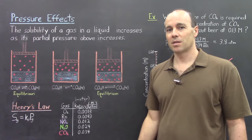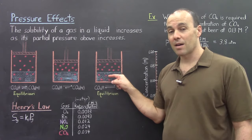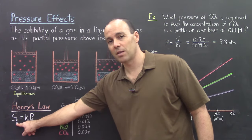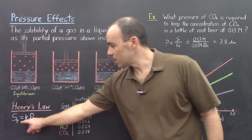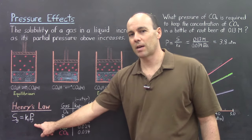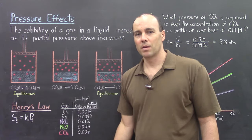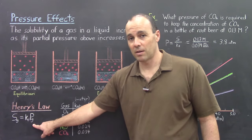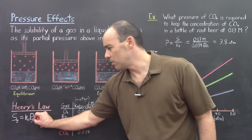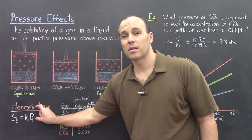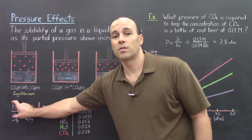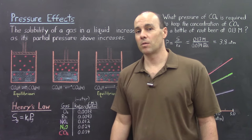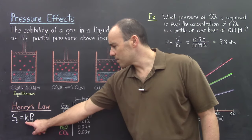Henry's Law tells us not only that solubility does increase with pressure, but also how much it increases. Henry's Law states that the solubility of the gas (its concentration) is equal to a constant times the partial pressure of the gas above. This is a very simple relationship: the concentration of dissolved gas is directly proportional to the partial pressure of the gas above. If you double the partial pressure, the dissolved concentration also doubles; if you triple the partial pressure, the concentration triples.